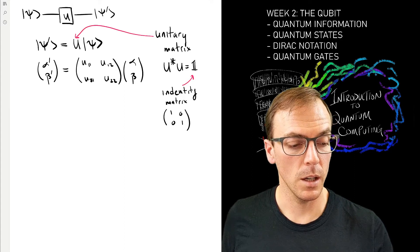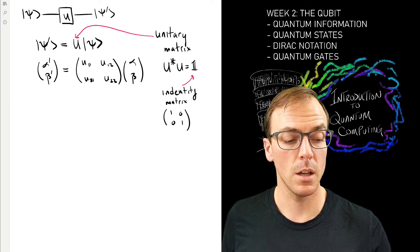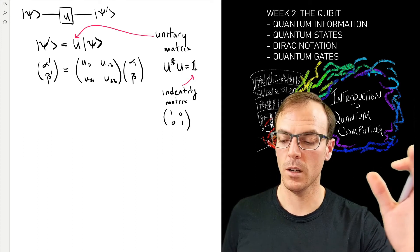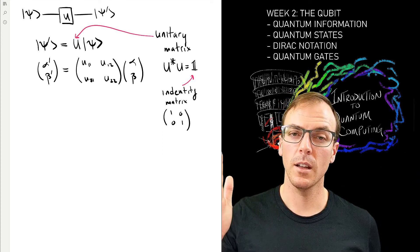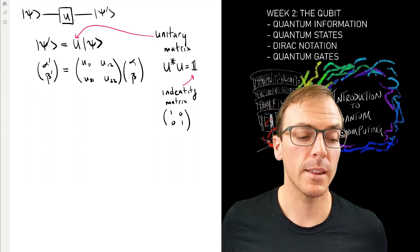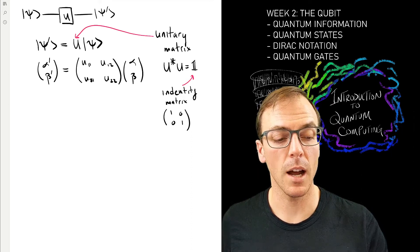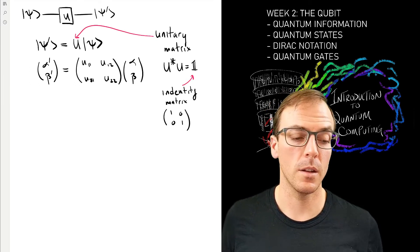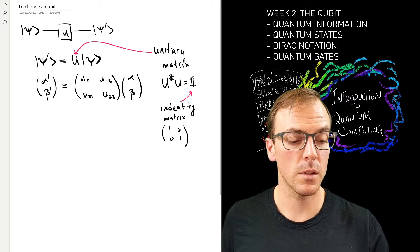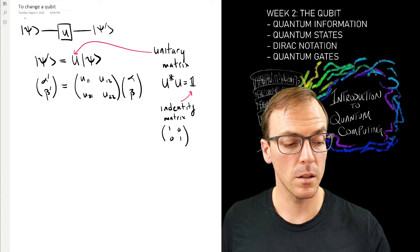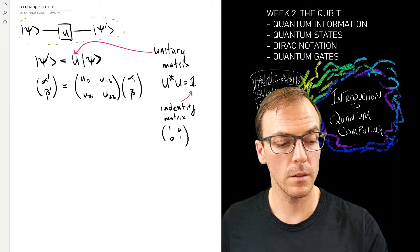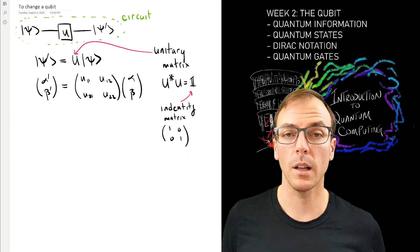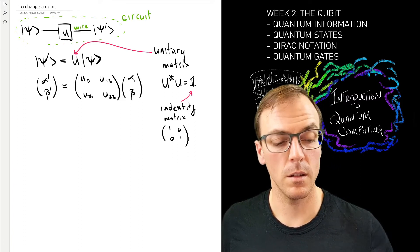In this pictorial notation, I start on the left and move to the right, and that specifies in time how the state of the qubit changes by applying the unitary matrices that appear on this line, which we call a wire. The notation here is the circuit, very similar to classical circuits, and this thing is the wire.